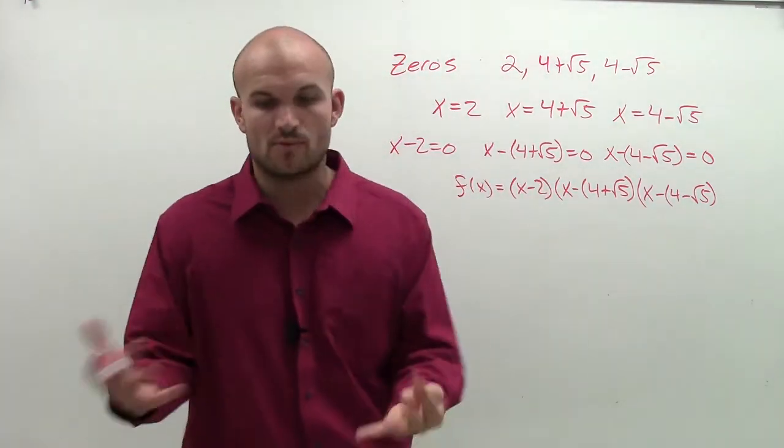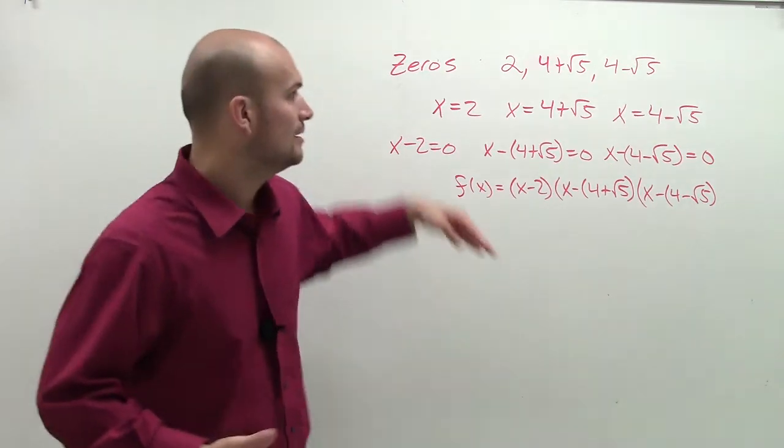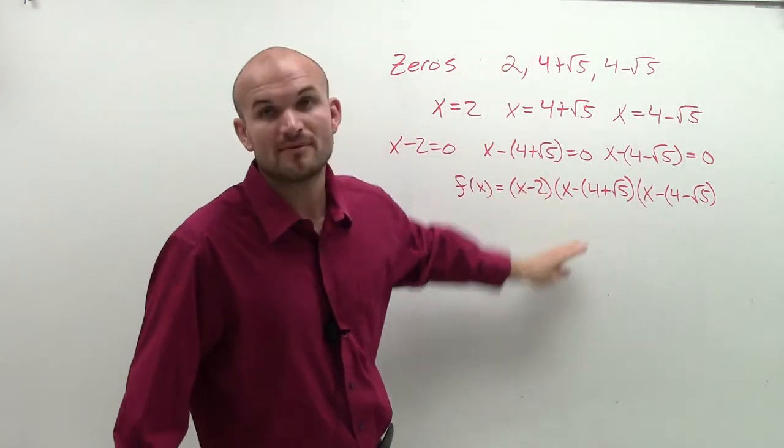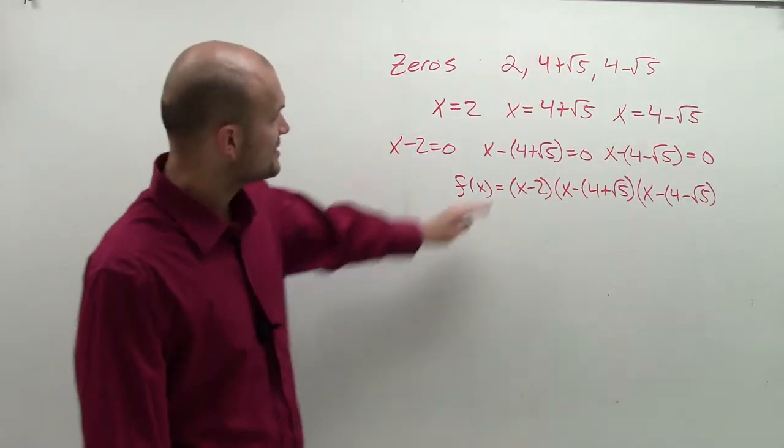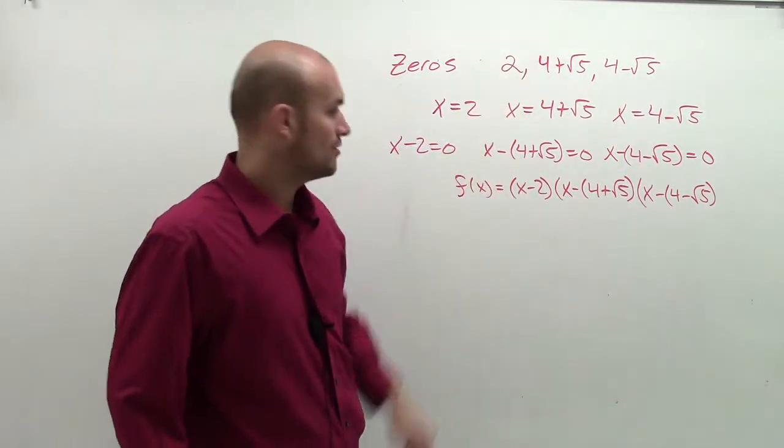And all I really did was when we factor a polynomial, we work from the function all the way down to the zeros. Well, now what we're doing is working from the zeros to the function. You can see this is kind of like the reverse operation of what we've been doing.